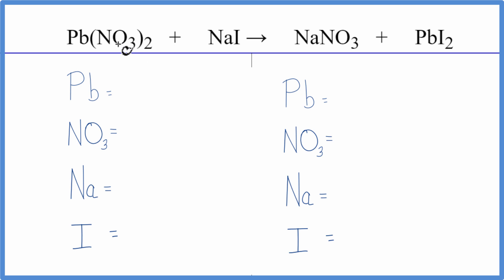This is something you can use when balancing double displacement reactions with polyatomic ions. Let's balance the equation. We have one lead, and this nitrate stays together in the chemical reaction. We count this as one thing, so one nitrate times two gives us two NO3 nitrate ions, one sodium, and one iodide.